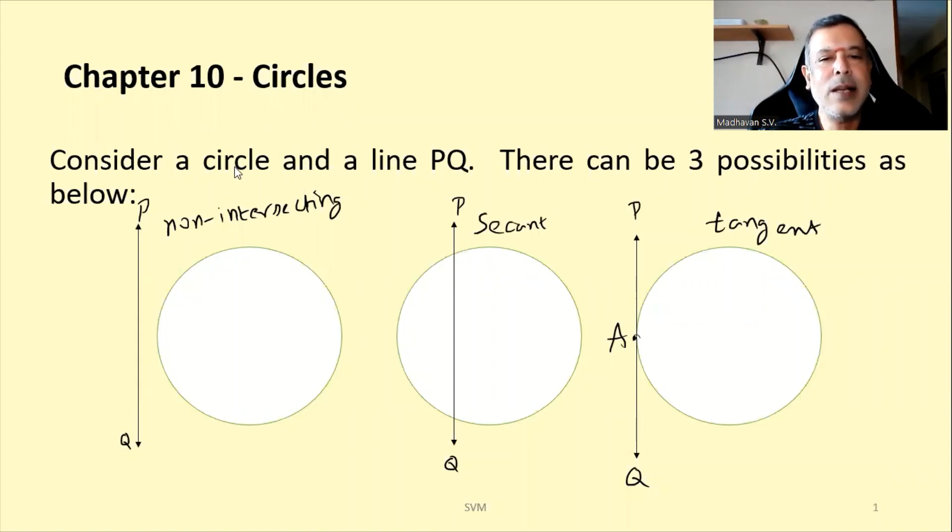Consider a circle and a line PQ. Then there are three possibilities. One is the circle and the line are not touching each other, it is not intersecting, so you call this as non-intersecting. Another one is this line can intersect the circle at two points lying on the circle, then we call this as secant. Or the line will just touch the circle at a single point, here we are calling that point as A, then we call this line as a tangent.